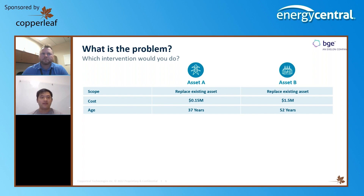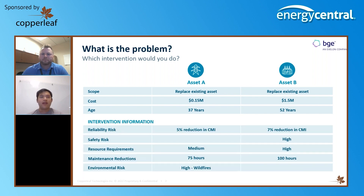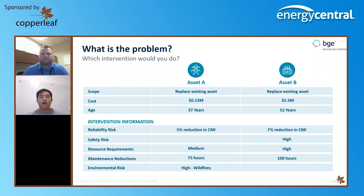From here you can make a pretty decent educated guess into which one is more valuable to your organization. But if we add a couple more criteria — such as reliability risk, the reduction in CMI if we replace this, improvement in safety risk, the required people resources and labor hours needed for each intervention, reduced maintenance and operating expenses, as well as wildfire risk — how do you make a good decision on which intervention to do?